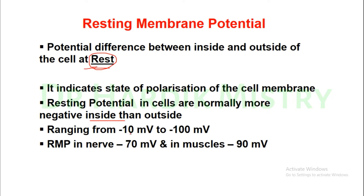The resting membrane potential ranges from minus 10 mV to minus 100 mV and differs for different cell types. For a nerve fiber it is around minus 70 mV, and for muscle fiber it is around minus 90 mV. You must remember: nerve fiber is minus 70 mV and muscle fiber is minus 90 mV.